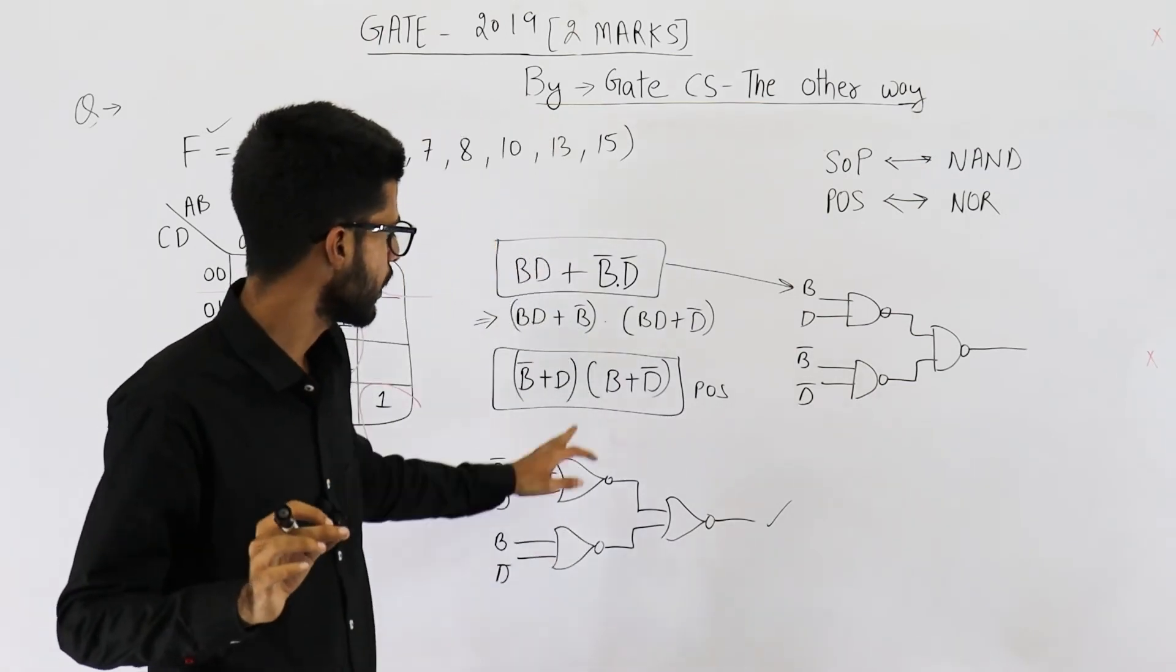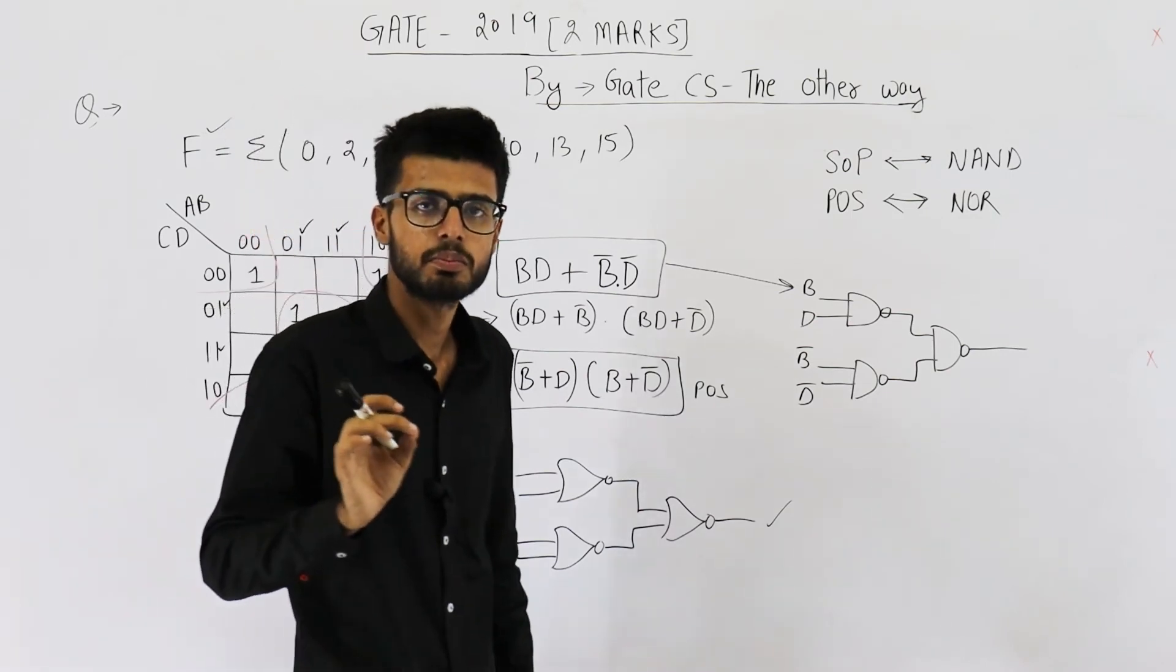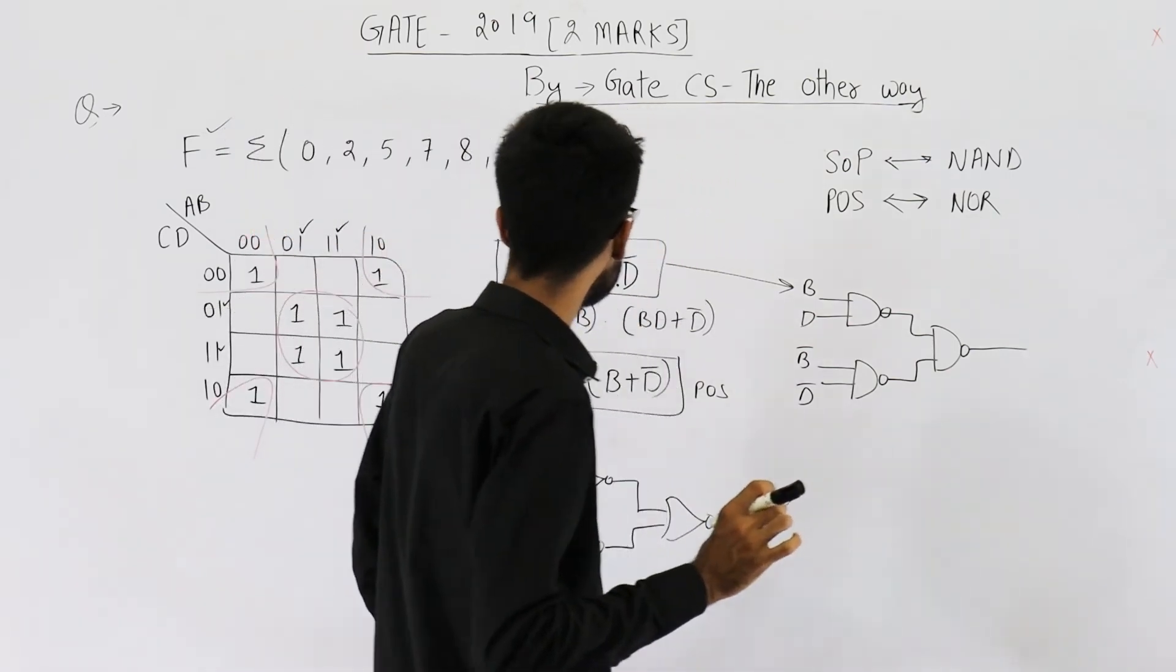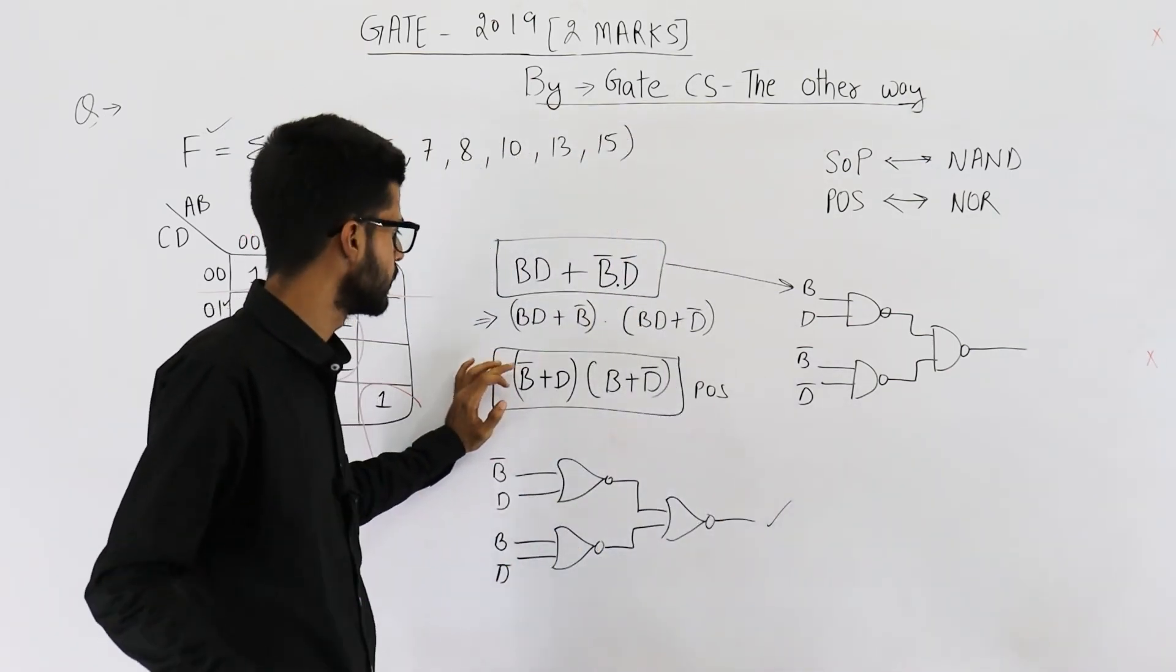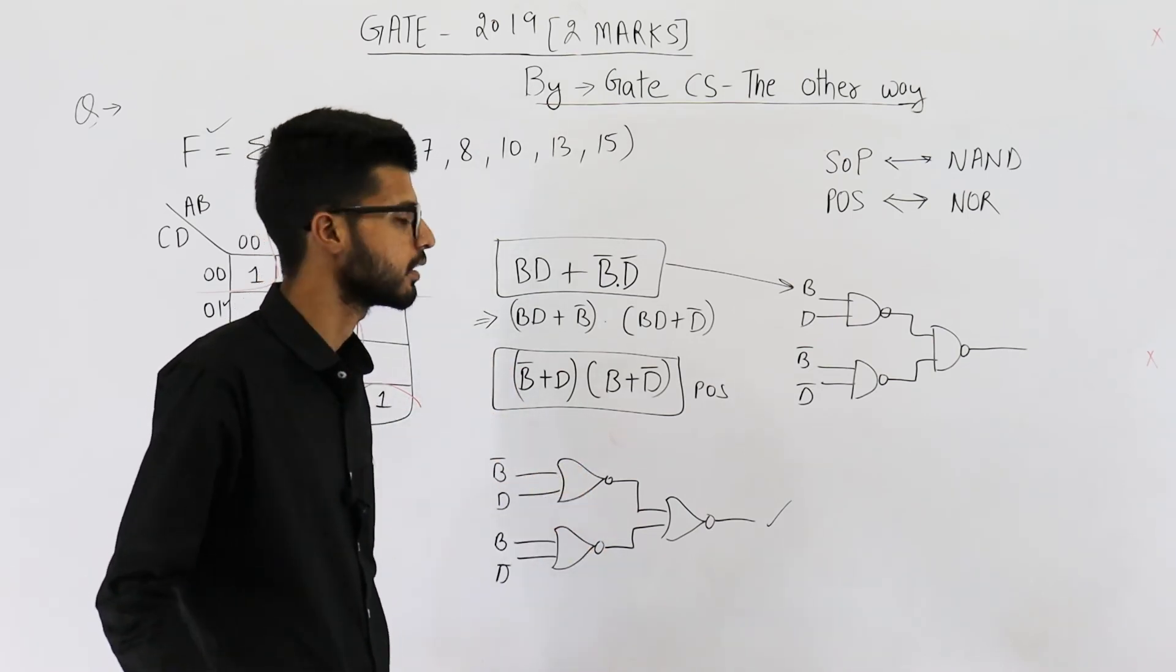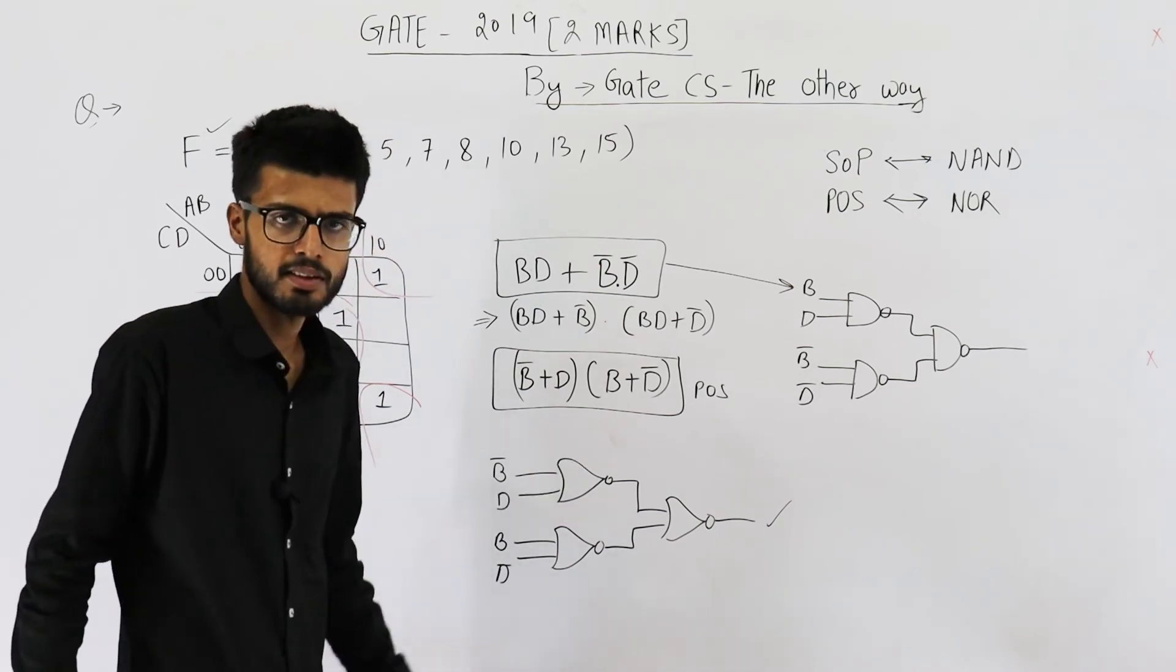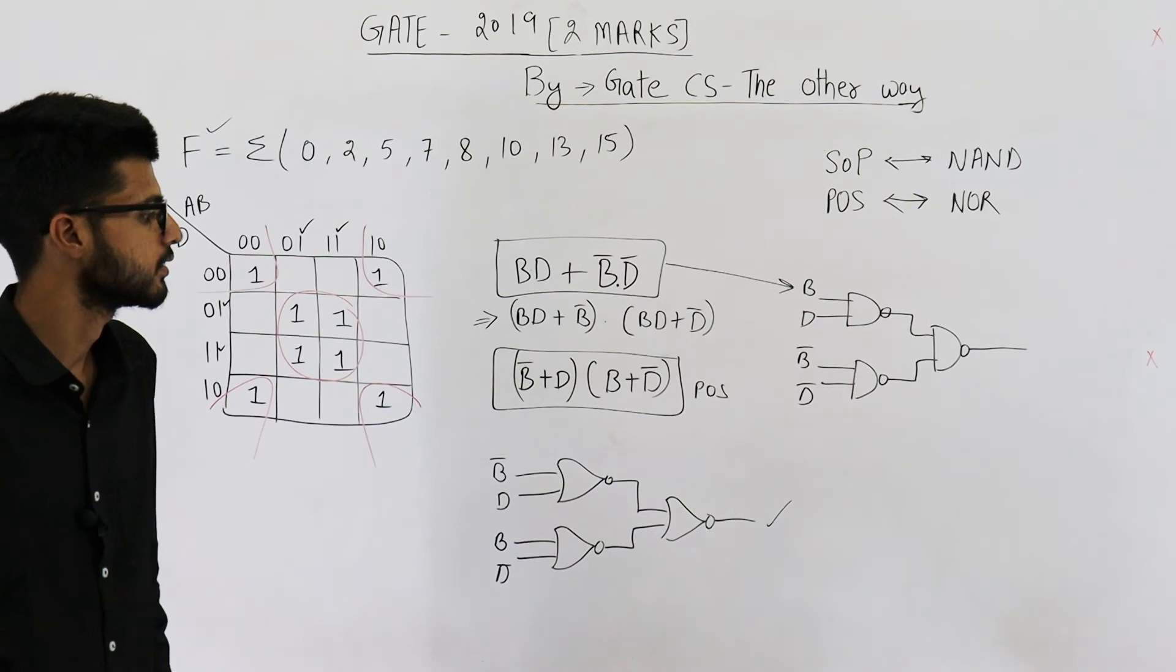If you don't know how to convert an expression into a circuit, you can watch my theory lectures. So it's simple. This POS form can be converted into a circuit of NOR gates very easily. So I've discussed this in great detail in my theory lectures.